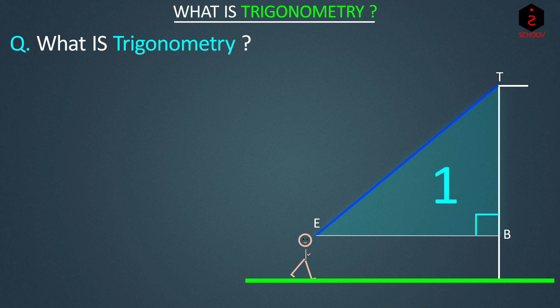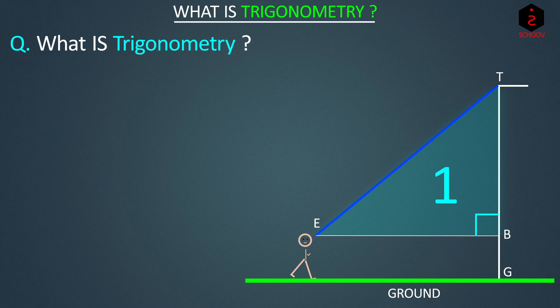Let's say that the tower touches the ground at G. Now it is easy for me to measure my distance EB from the tower. And I can also find this angle theta made by my line of sight with the horizontal line. Theta is just a representation of an angle.